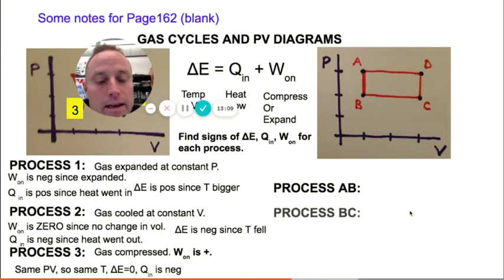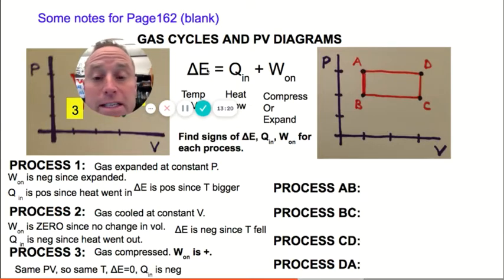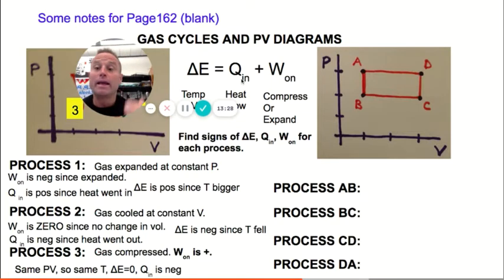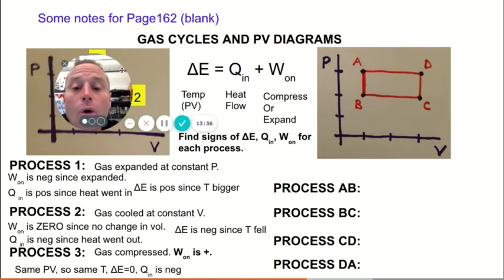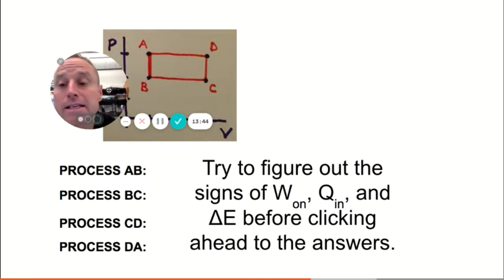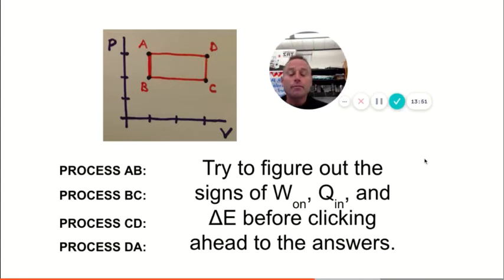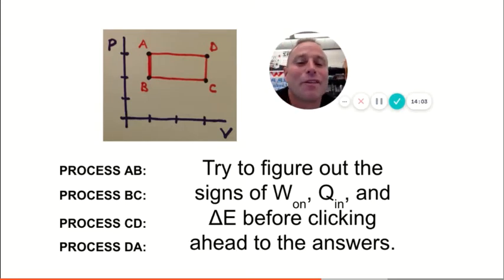Look at these four processes — A to B, B to C, C to D, D to A — and try to figure out the signs of delta E, Q in, and work on for each. Remember: for work, only look at whether you compressed or expanded. For heat flow, did heat go in or out? For change in internal energy, look at the temperature or the product of P and V. Pause the video and give it a try.